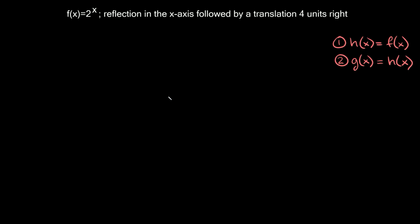What's up you freaking geniuses? In this video I'm going to teach you how to write a rule for g of x given f of x. We're specifically going to cover exponential functions or transformations of exponential functions. So let's start with this one right here. We're given that f of x is equal to 2 raised to the x, and the transformations we have to apply are a reflection in the x-axis followed by a translation four units to the right.